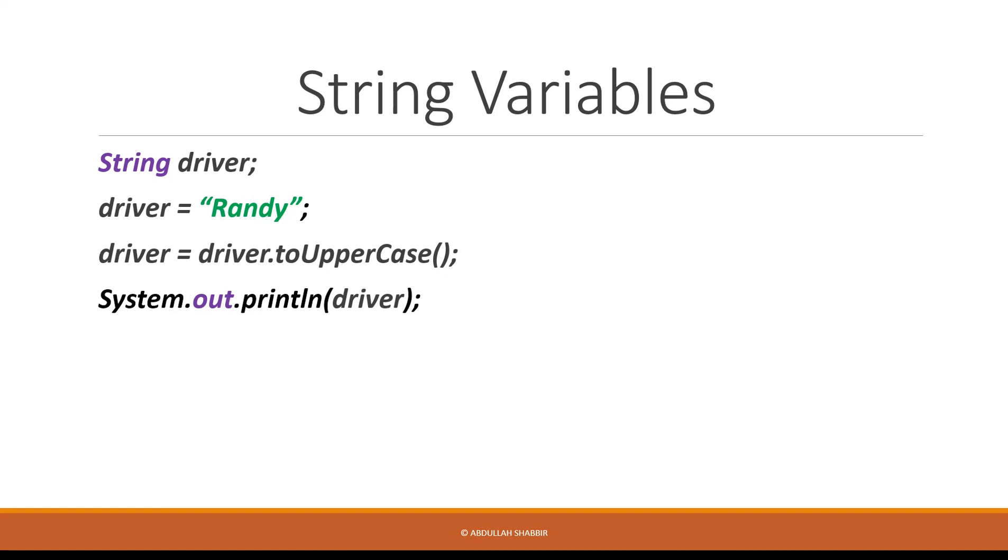So let's print out our variable driver to see what happened to it. Once we run this program, this is the output that we get. It's exactly the same string, but every letter is now a capital letter, thanks to this command toUpperCase. There's another one called toLowerCase, which is obviously the opposite, and there's more. We'll learn a lot more about strings and what we can do with them later on in this course. Let's have a look at another cool thing we can do with strings called concatenation.